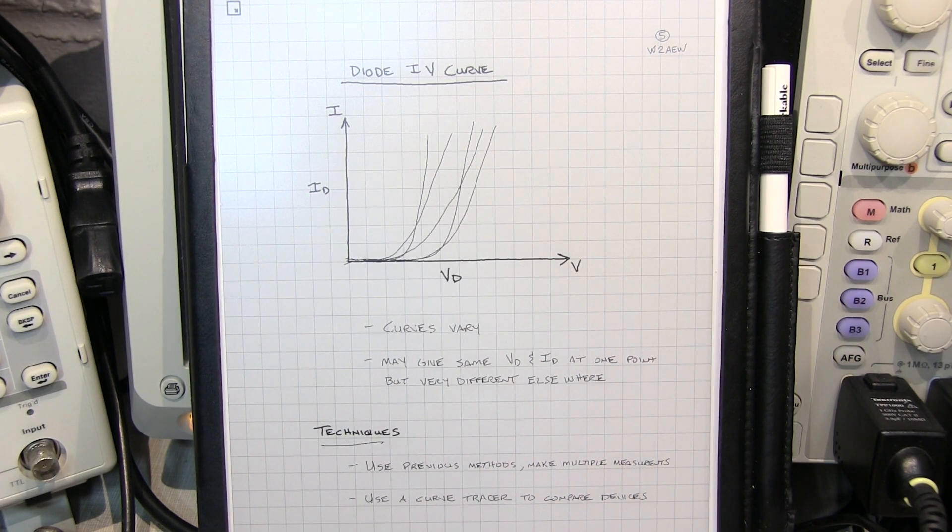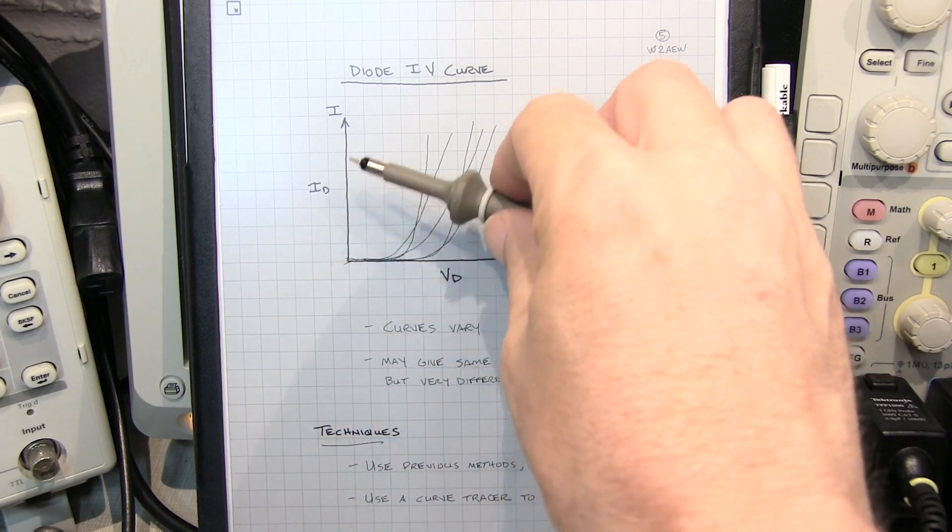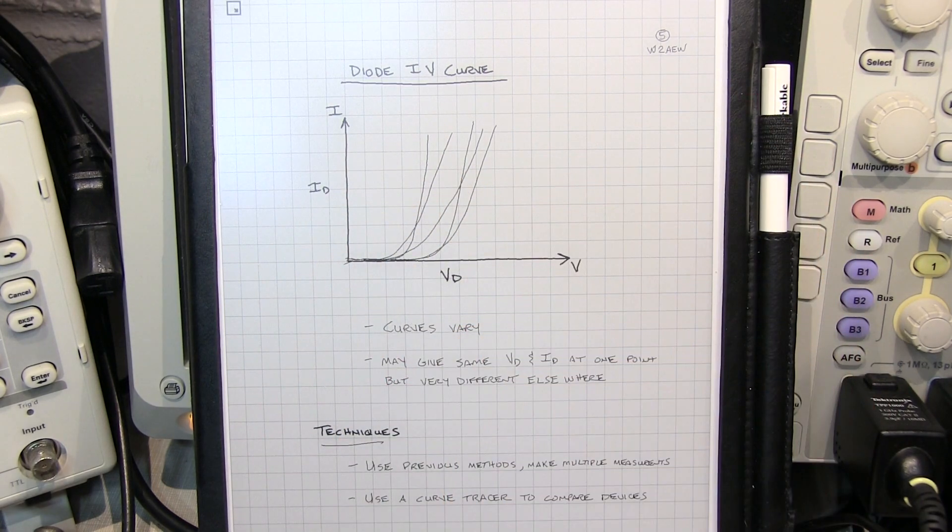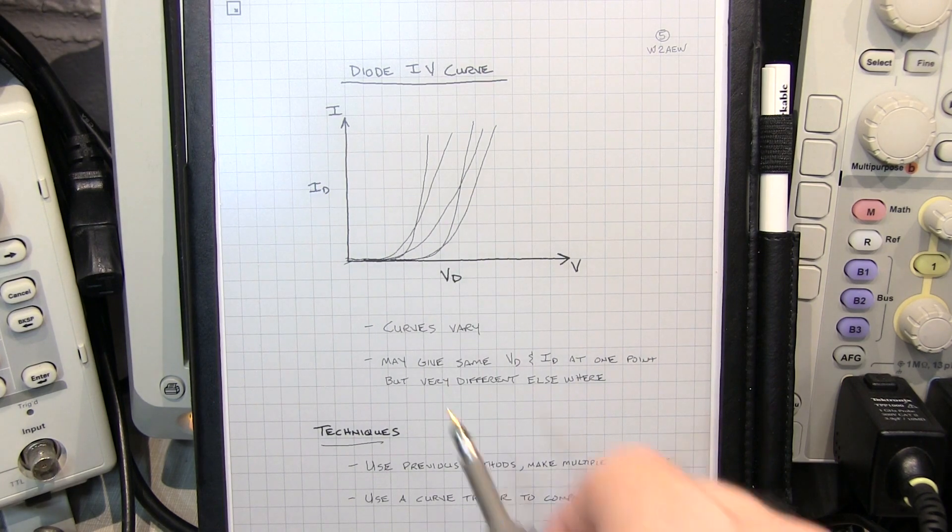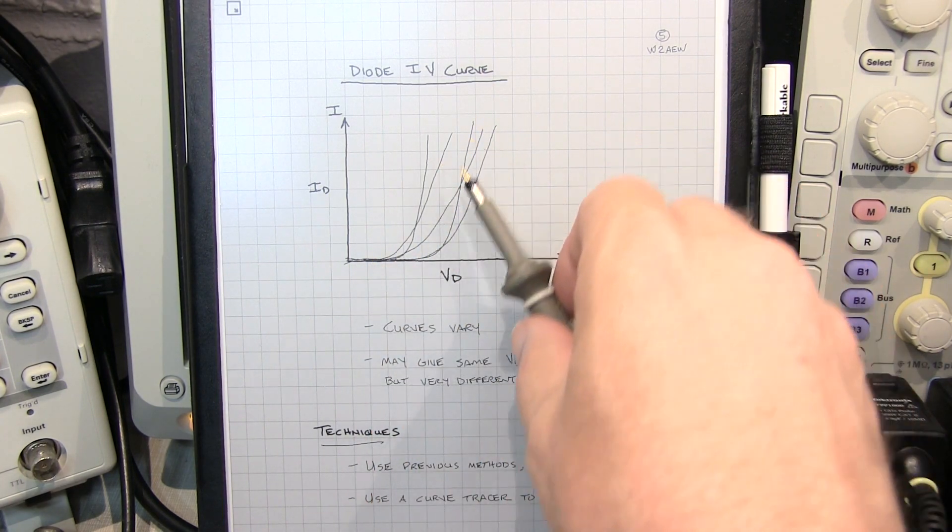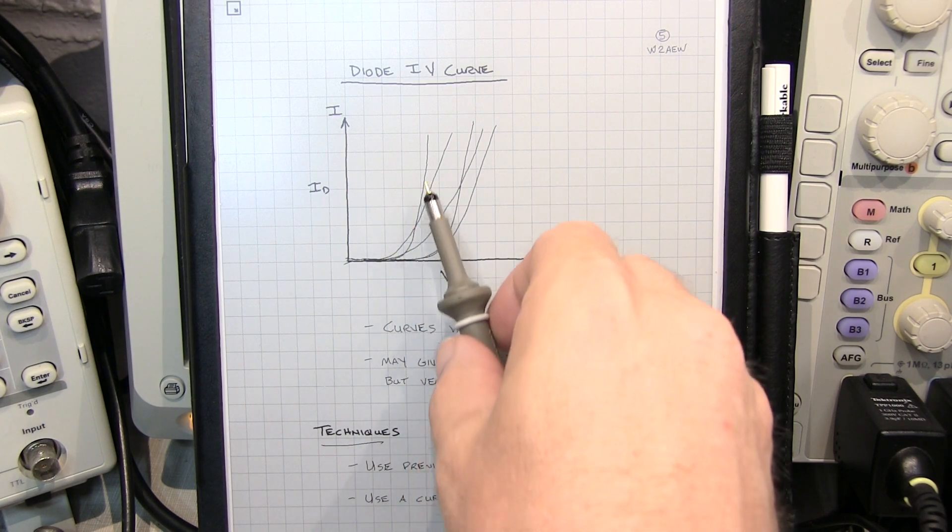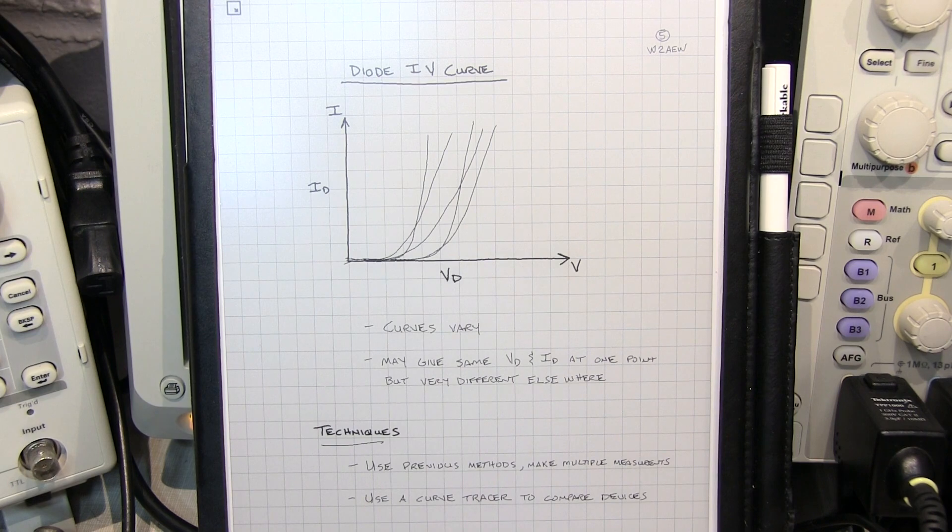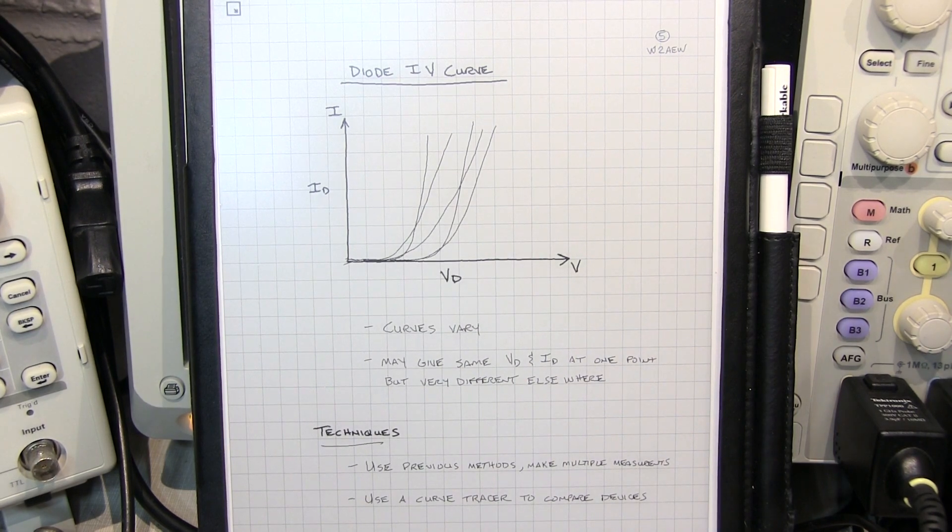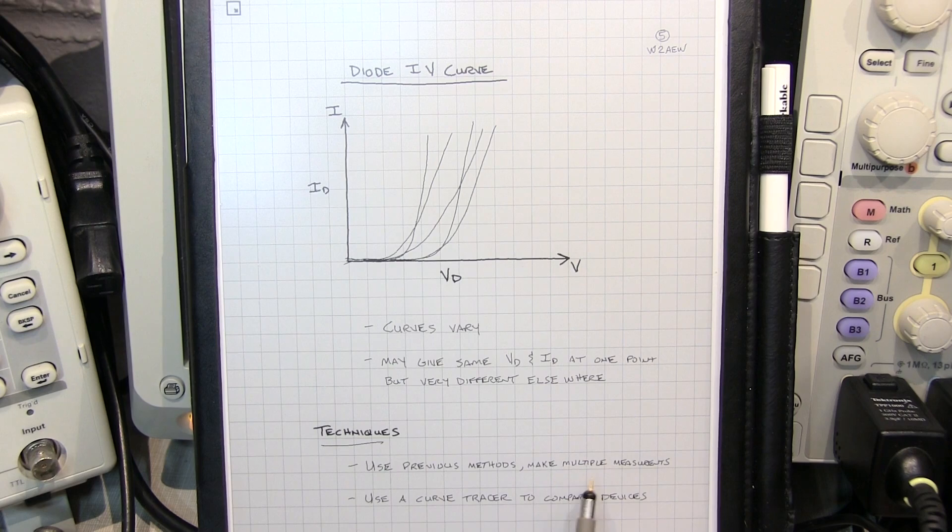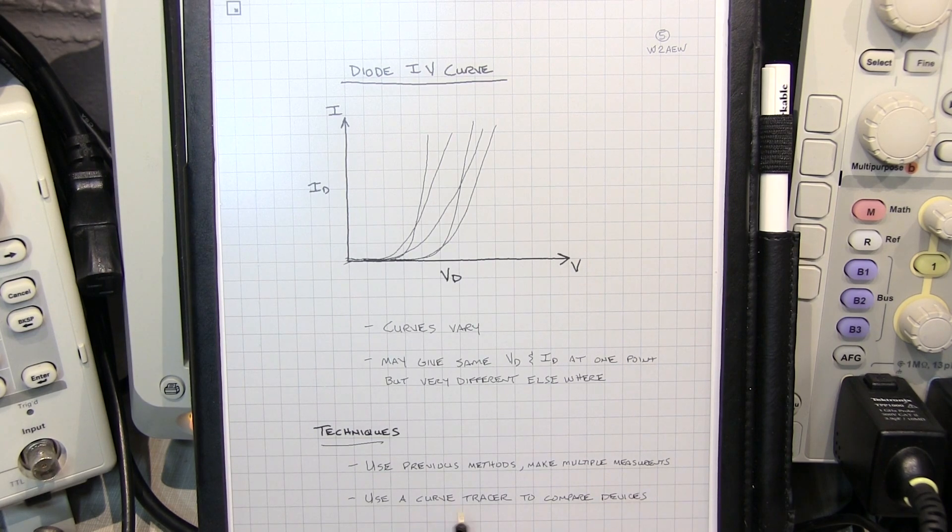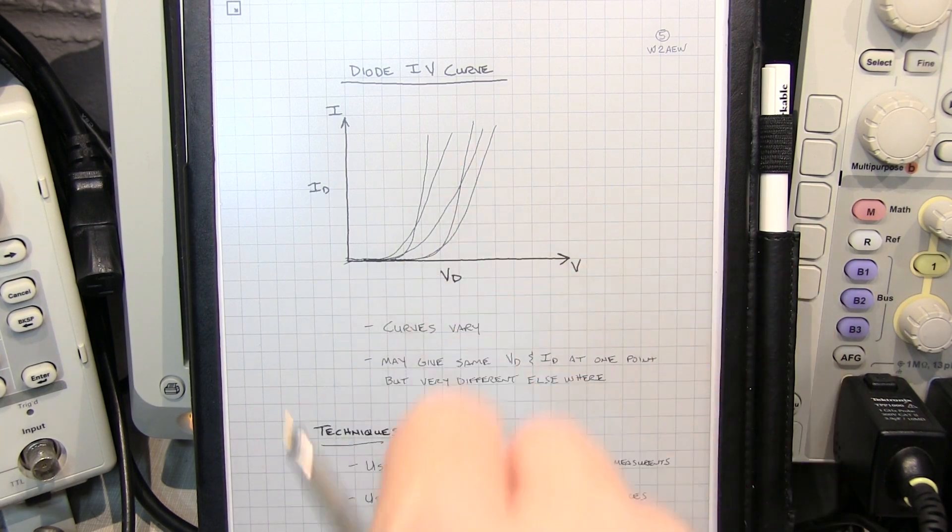So, of course, you can do this with some of those previous measurements, by making yourself multiple measurements at various test currents, and plot them out yourself on paper, or with Excel, or something like that. But you do have to take into account what those curves look like, so you don't get fooled by places where they have the same exact voltage, because they might be quite different when you actually test at a different current level. So again, the techniques would be to use the previous methods to make multiple measurements, or use something like a curve tracer, or even a modern instrument like a source measure unit to actually go make the measurement of these particular curves.